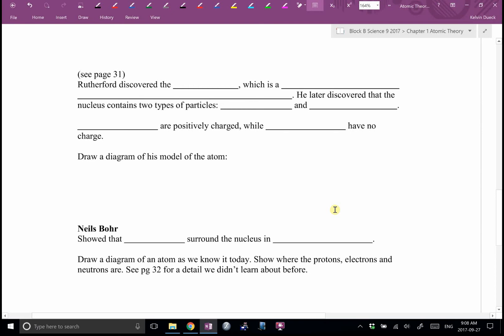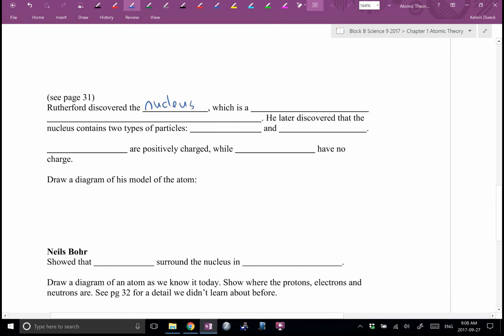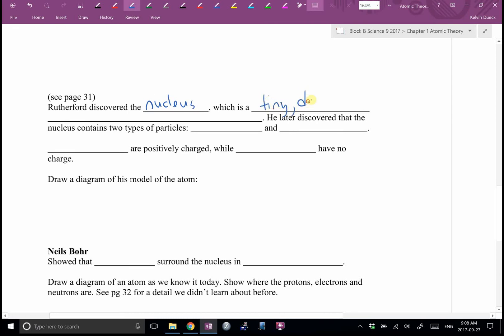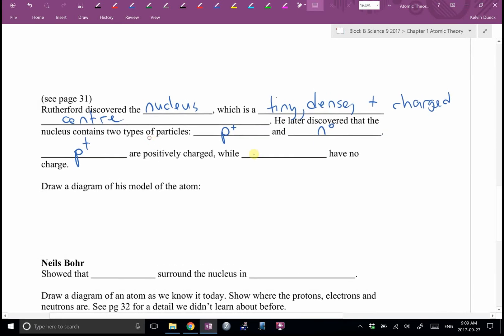Rutherford discovered the nucleus, which was a tiny, dense, and he also knew it was positively charged. He didn't know that the reason it was positively charged was because the protons were there. But, he just knew it was positively charged. He didn't know about protons yet or neutrons yet. Center of the atom. He later discovered that the nucleus contains two types of particles. What did we say is inside the nucleus? The really tough ones to discover were the neutrons. We usually use charged objects to detect other charged objects. But, because neutrons have no charge, they didn't react with our normal bank of experiments. It took some real cleverness. Which ones are positively charged? Okay. P+. Which ones have no charge? Neutrons.